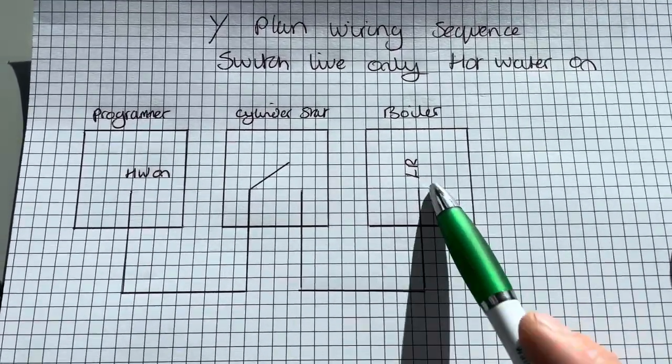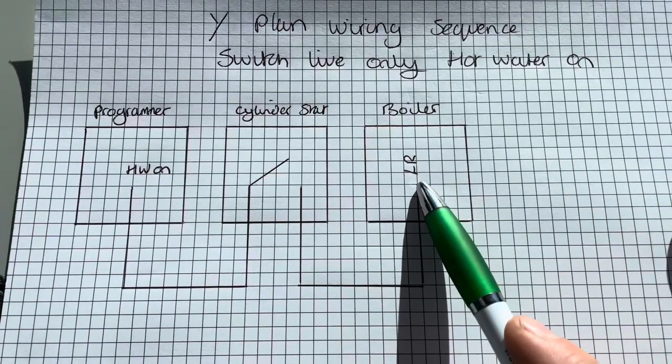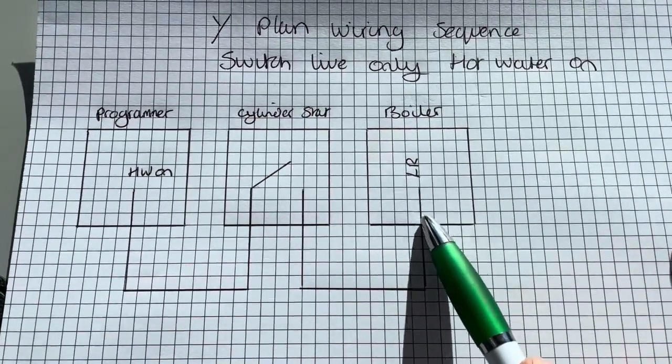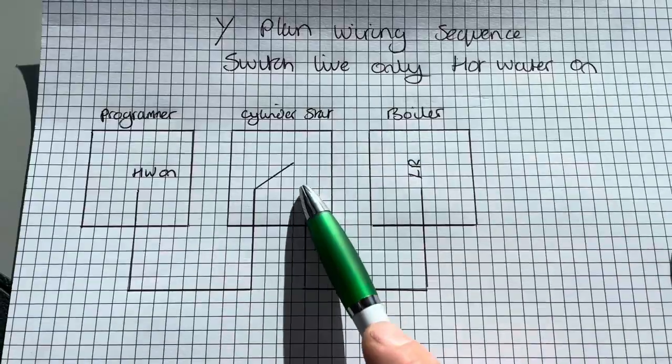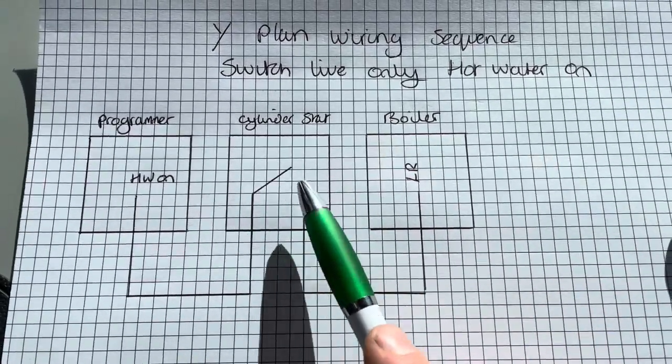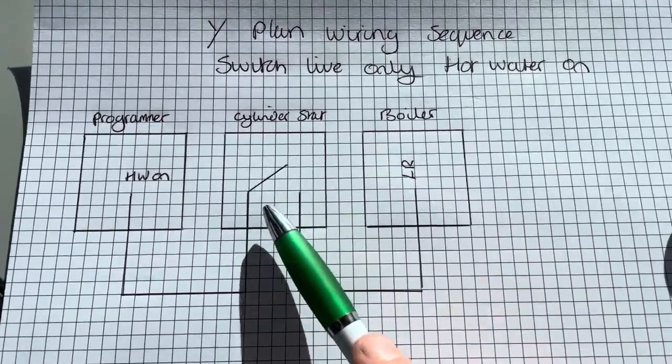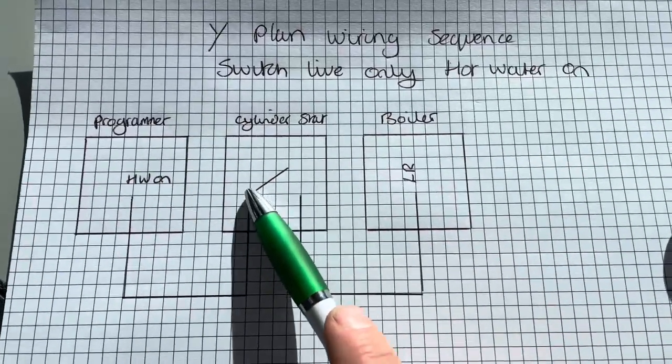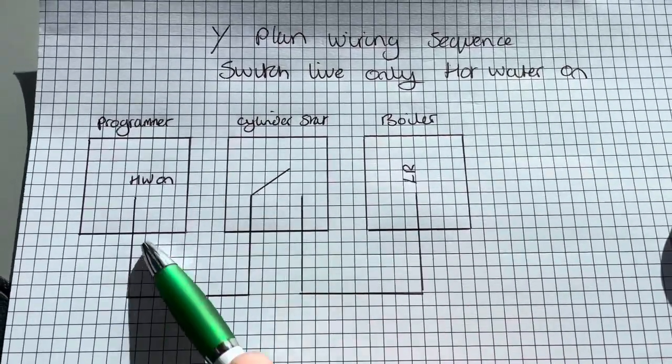You go to no hot water. Have you got power to the boiler on the live return? No, you haven't. So you track it back. Do you have power to your cylinder stat? Well, you have power going to it, but you don't have power going through it, so you need to change your cylinder stat. Have you got power going to the cylinder stat? No. We'll change the programmer.